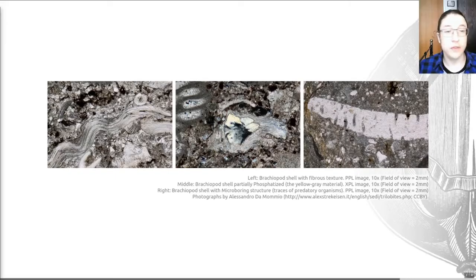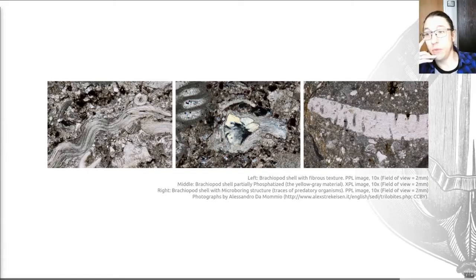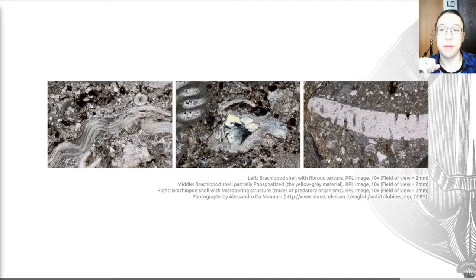In cross-polarized light you can see some phosphatization of this shell and also some nice interesting micro boring structures. These are traces of predatory organisms on that original shell. Within the different groups of brachiopods there are quite strong differences in shell microstructure, which is visible in thin section if the shell has not been recrystallized. That's another reason why slides are useful with brachiopods.